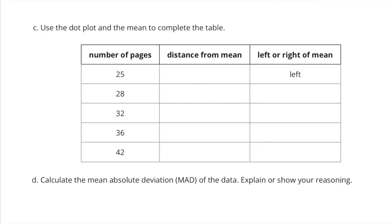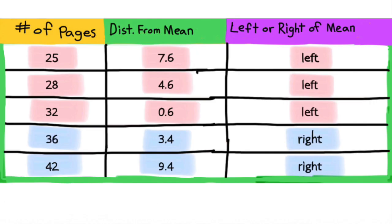Part c: Use the dot plot and the mean to complete the table. 25 pages is 7.6 pages from the mean to the left. 28 pages is 4.6 pages from the mean to the left. 32 pages is 0.6 pages from the mean to the left. 36 pages is 3.4 pages from the mean to the right. And 42 pages is 9.4 pages from the mean to the right.